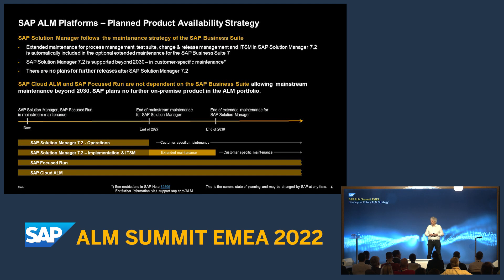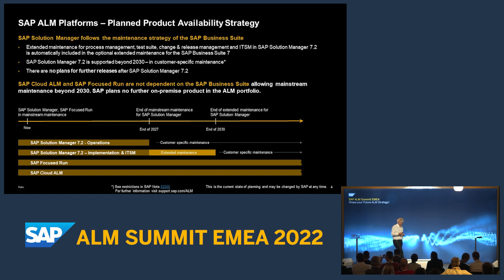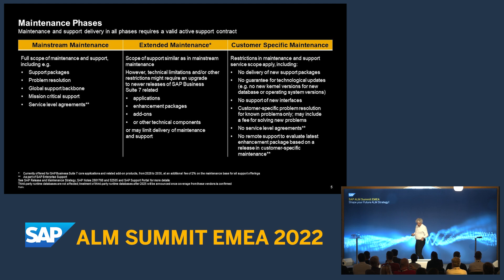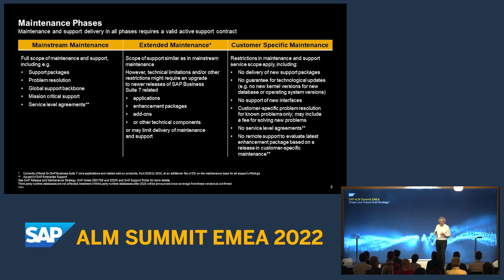Was anyone surprised by the announcement? Either people are shy, or we just said what everyone had already expected. Solution Manager 7.2 will still be available in customer-specific maintenance even after 2030, but that is a concept that exists for all SAP on-premise products — nothing specific to Solution Manager. There is a well-known note — 52025 — that describes the restrictions that apply in customer-specific maintenance.